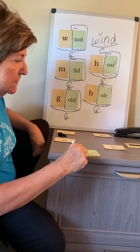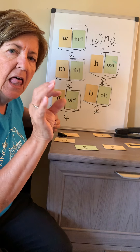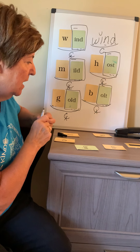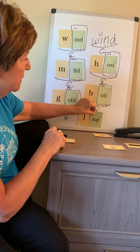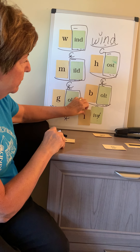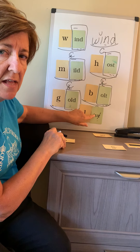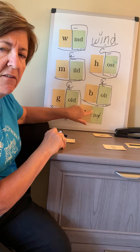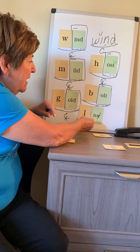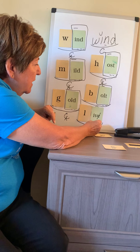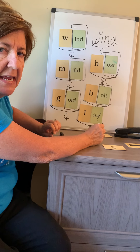Let's use our I-V-E exception. Let's build the word LIVE. Tap it: L-IV. Now, this is not a closed exception because this looks like a vowel consonant E word. But we know that vowel consonant E words have a long vowel — this one doesn't. It has a short I. So that's what makes it an exception. We call it a vowel consonant E exception, and I'm going to put the X on the dash.